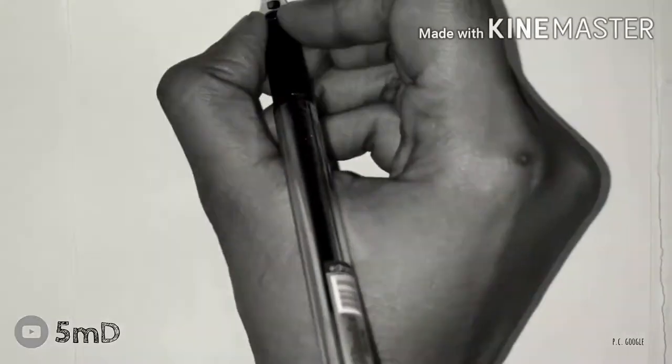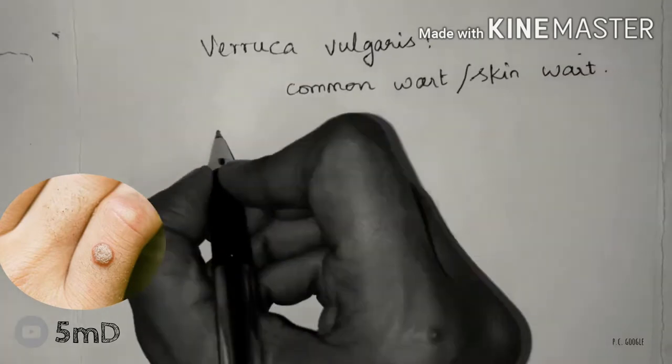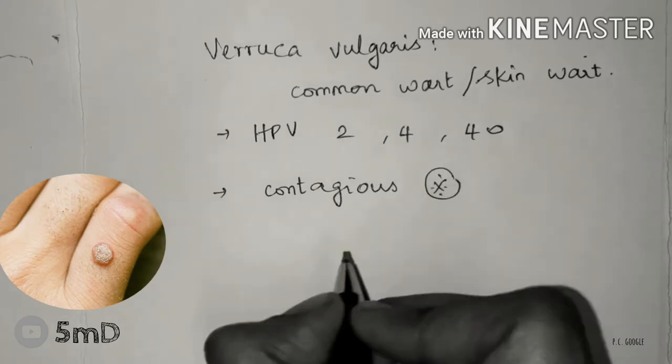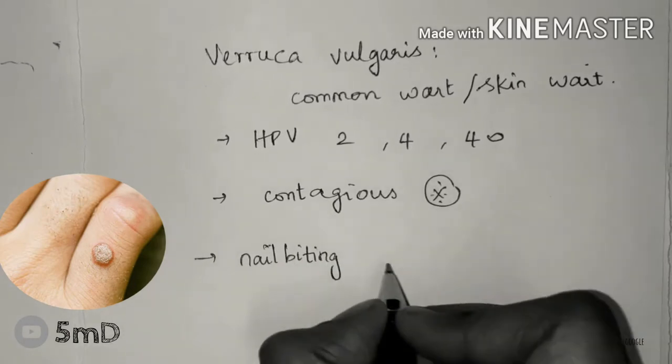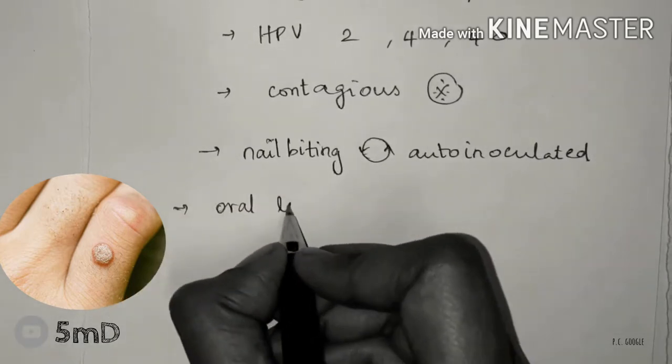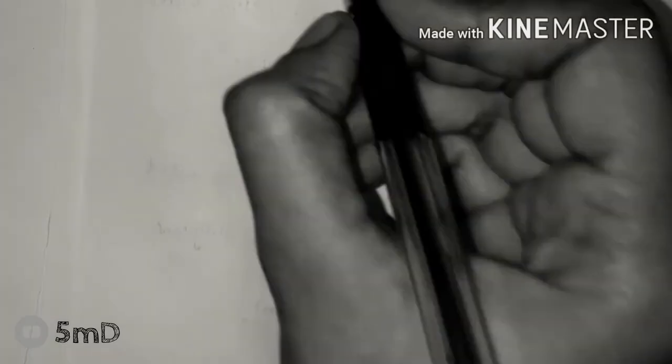Verruca vulgaris, commonly known as the skin wart, is similar to the mucosal papilloma but virus types associated include HPV 2, 4, and 40. Verruca vulgaris is contagious unlike papilloma, and due to nail-biting habit and other such habits can be auto-inoculated. Oral lesion of verruca vulgaris is not similar to the papilloma.